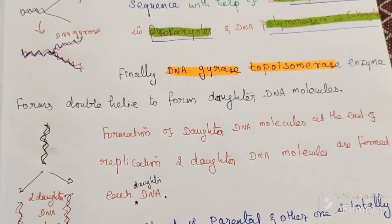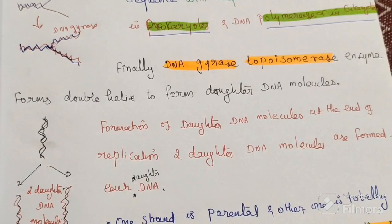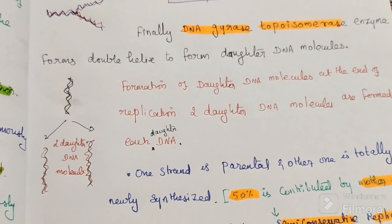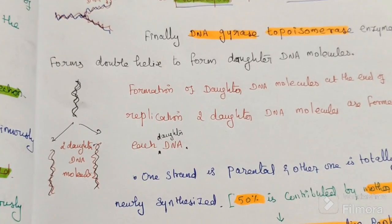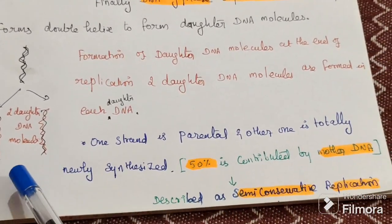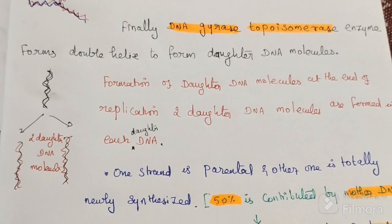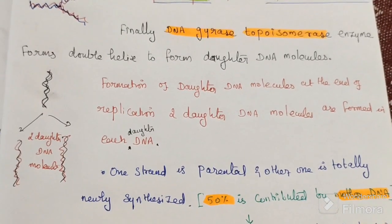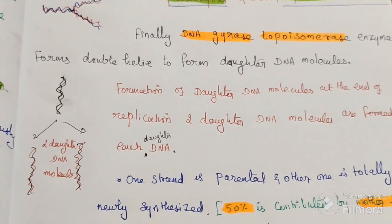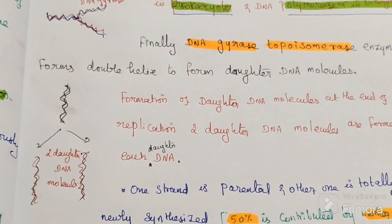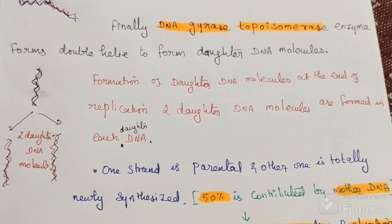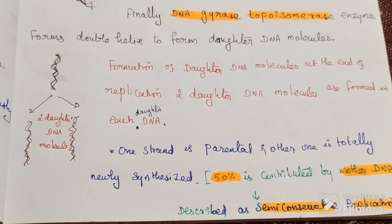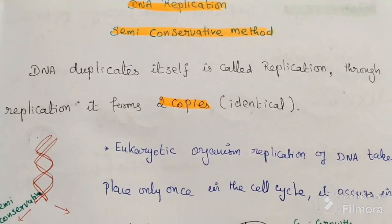Formation of daughter DNA molecules: at the end of replication, two daughter DNA molecules are formed. In each daughter DNA, one strand is from the parental DNA and another is newly synthesized. Thus, 50% is contributed by the mother DNA. Hence, it is described as semi-conservative replication — one strand is parental and another is newly synthesized. In this video, we discussed the semi-conservative model of DNA replication.